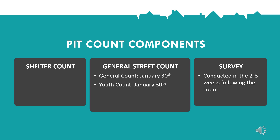The other components include the shelter count, the youth count, and the survey. The shelter count collects information on the number of people staying in shelter programs across the community. The youth count focuses on counting unaccompanied young people under the age of 25, and is typically conducted between the hours of 8pm and 12am. The survey component is typically conducted in conjunction with the general street count. Surveys are conducted with a representative sample of people experiencing homelessness and provide a more detailed understanding of the homeless experience, including information on veterans, families with children, and people experiencing long-term homelessness.